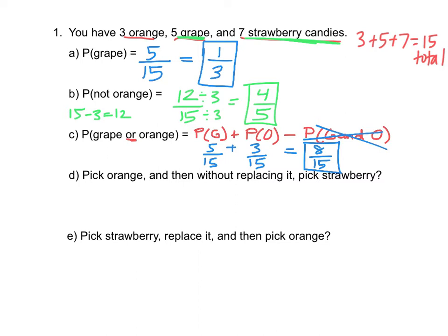Now let's say we pick an orange, then without replacing it, pick a strawberry. This is an 'and' — remember 'and' means we're going to multiply. So picking an orange, we have a three out of 15 probability. Then without replacing it, on my next draw for strawberry, if I don't replace the orange, now I only have 14 candies left because I took out one. And of those 14 candies, seven are strawberries. We multiply those fractions together: three times seven is 21, and 15 times 14 is 210. That simplifies to one over 10.